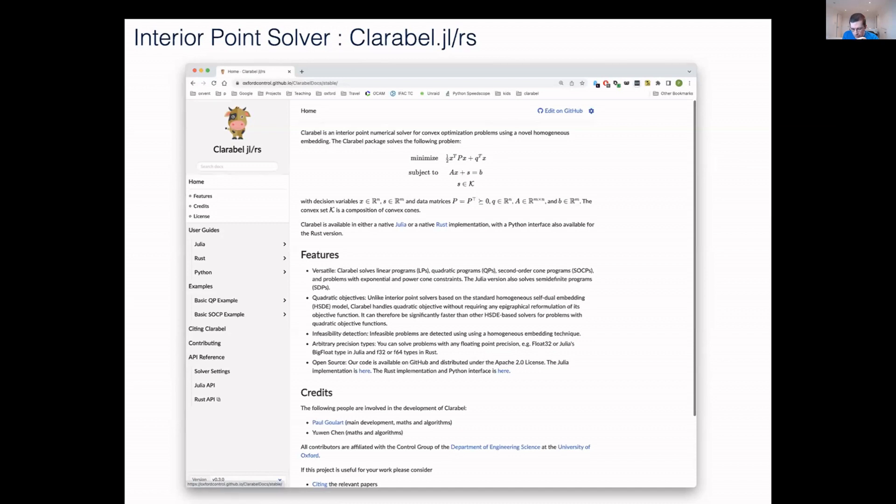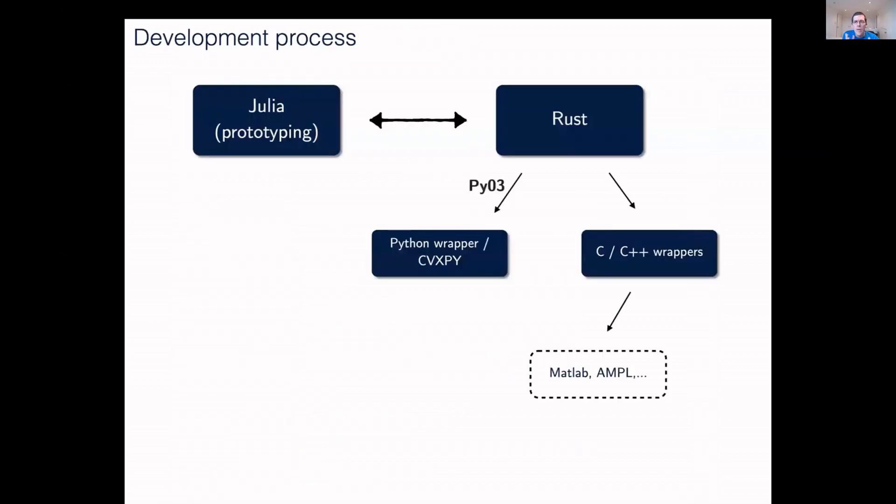Instead, I'll comment about our workflow and how we develop this package. We have two parallel implementations. One's in Julia, which we use for prototyping, and one is in Rust. We try to keep those two things completely in sync with each other.